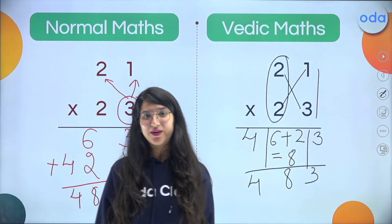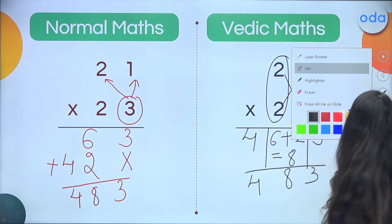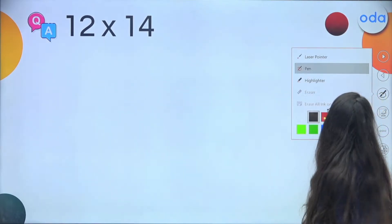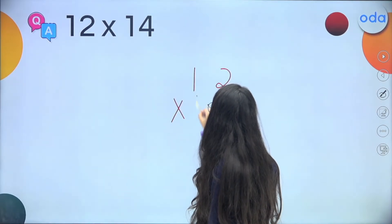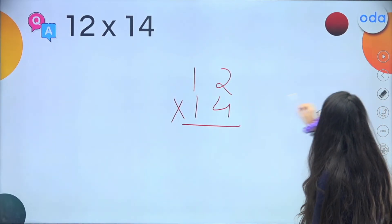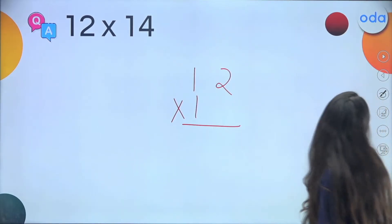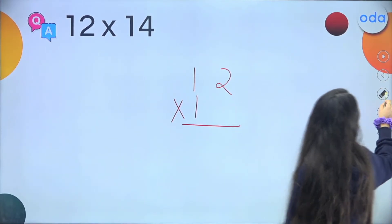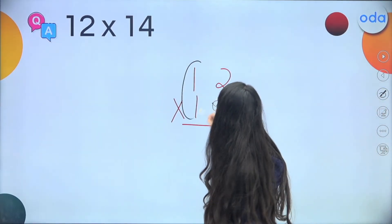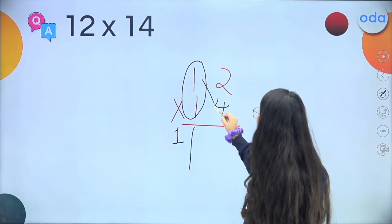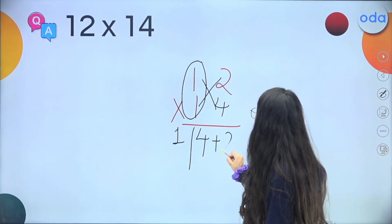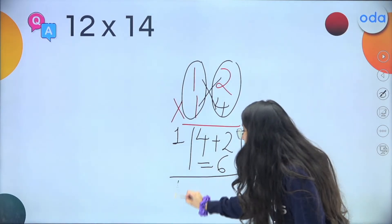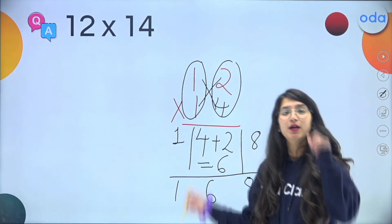If you enjoyed learning this trick, give me a thumbs up in the chat box! Now here's the first practice question: 12 × 14. Let's see who does it faster. Step 1 — vertical: 1 × 1 = 1. Step 2 — cross: 1 × 4 = 4, 1 × 2 = 2, so 4 + 2 = 6. Step 3 — vertical: 4 × 2 = 8. Answer: 168.